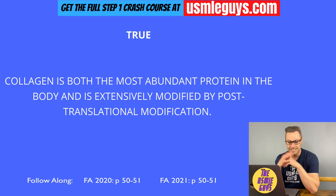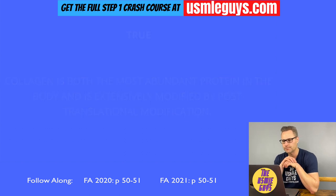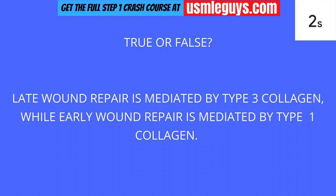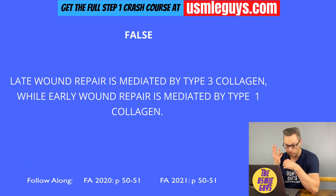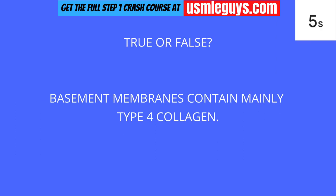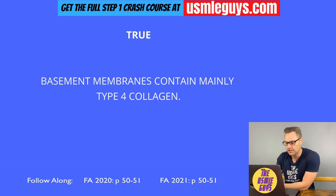Collagen is the most abundant protein in the body, extensively modified by post-translational modification, and necessary for organization and strengthening of the extracellular matrix. Next question — this is false: early wound repair is mediated by type 3 collagen; late wound repair is mediated by type 1. Next question — this is true: basement membranes found throughout the body are very rich in type 4 collagen, and the lens of the eye is also very rich in type 4 collagen.